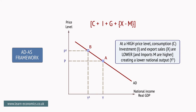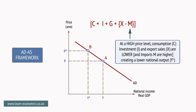At a high price level, consumption (C), investment (I), and export sales (X) are lower, and imports (M) are higher, creating a lower national output at Y1.